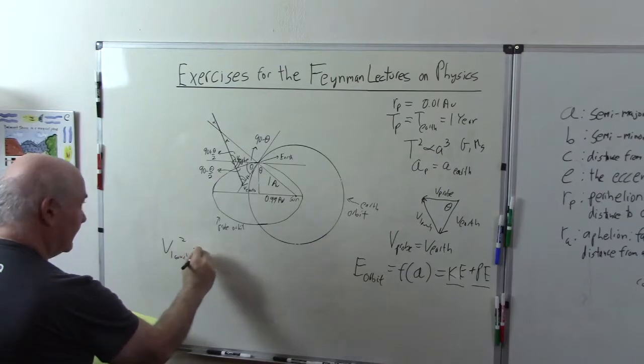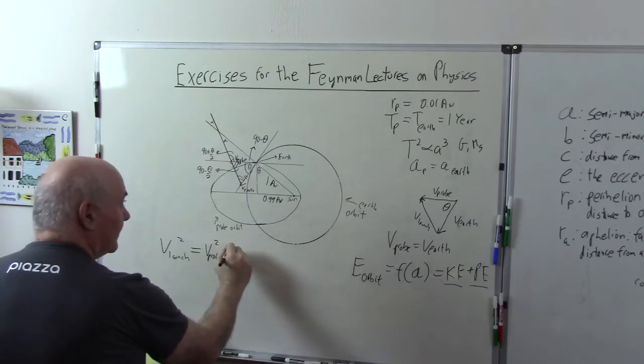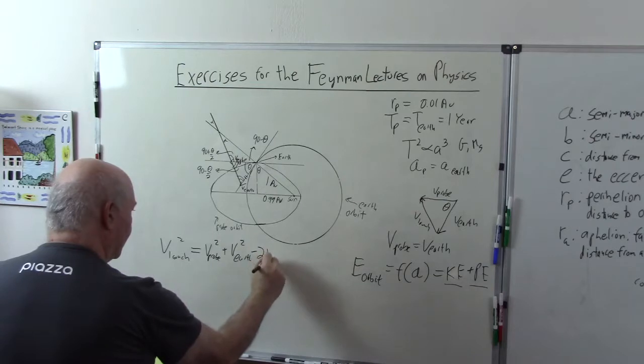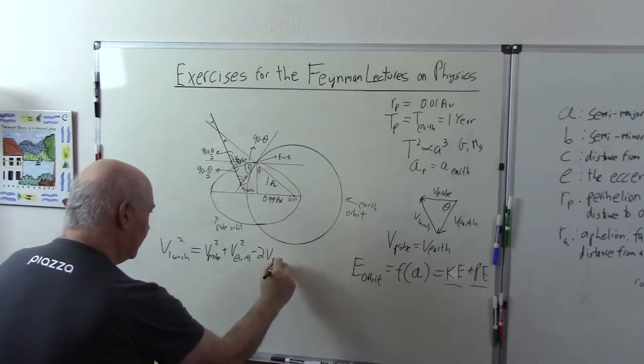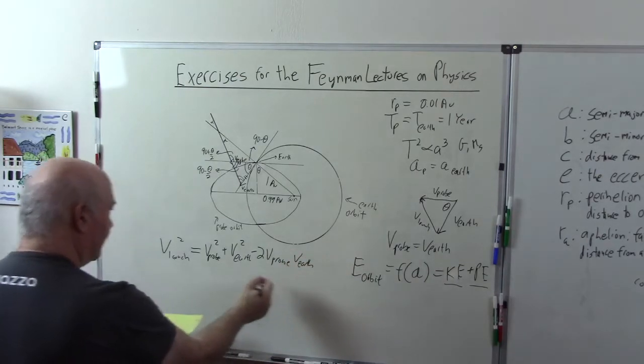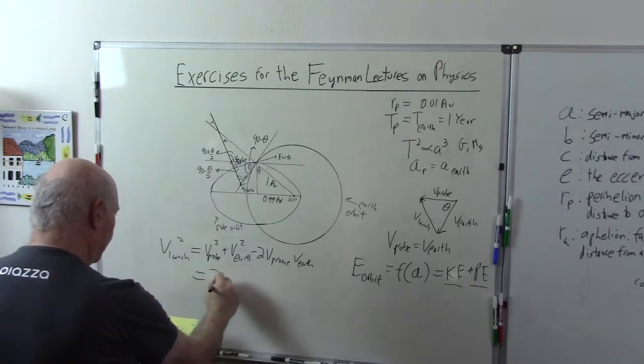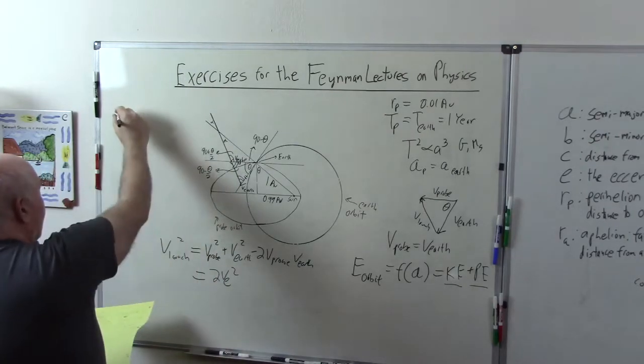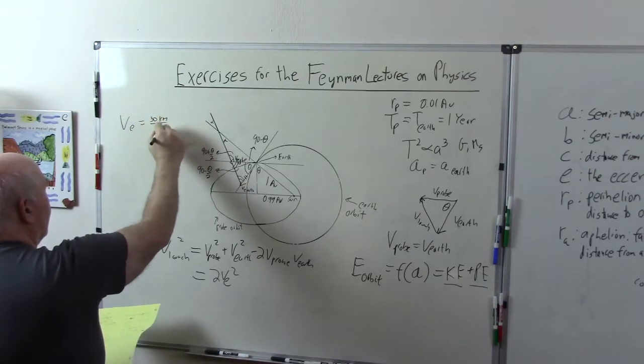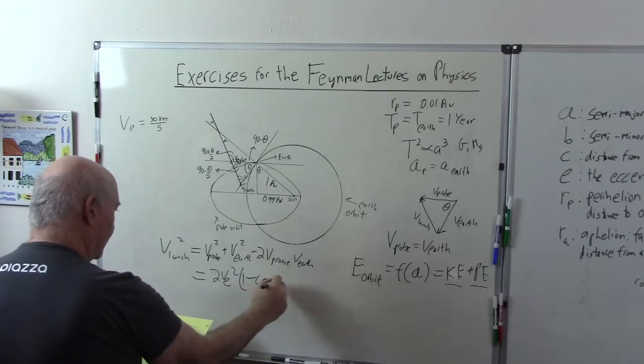Vlaunch squared is equal to Vprobe squared plus VEarth squared minus 2, this is the law of cosines, 2 Vprobe VEarth cosine theta. Now Vprobe and VEarth are the same, so this is equal to 2 VEarth squared, and we were given in the problem that the velocity of the Earth was 30 kilometers per second. So this is 2 VE squared times 1 minus cosine theta.